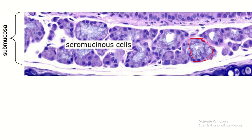This is the serous acinus. The acini take up more stain than the mucous acini. The nuclei are oval and present in the center of the cell because the secretion is watery, so the nucleus is not pushed basally.